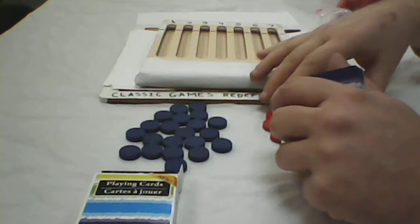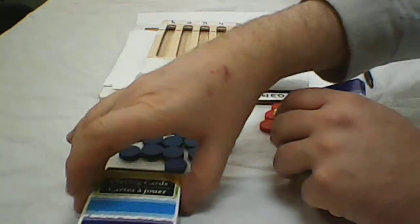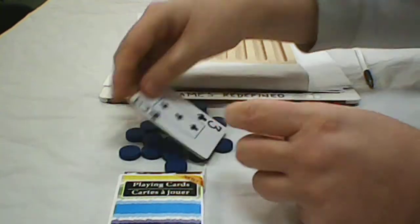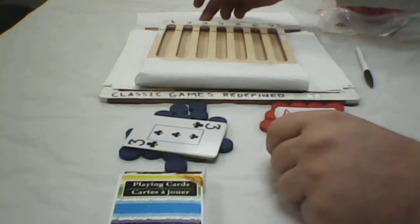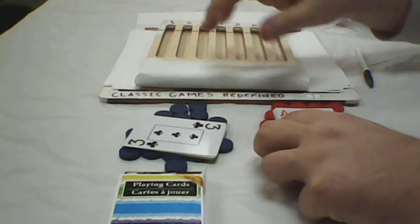What the initiative marker does is that in an event both players pick column three, the person who has the initiative marker would drop first. Drop one of their pieces in three. Their opponent then would drop in three on top of it.